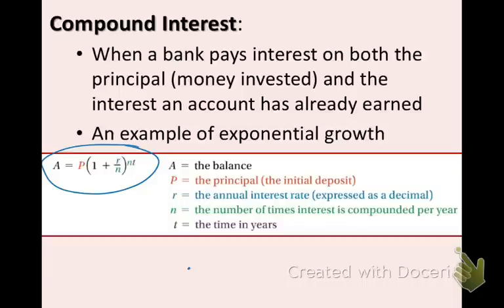A stands for the remaining balance. P stands for the initial amount. Underline that part, it's really important because principle is kind of a weird word. That means the amount that you deposited in the very beginning. R is the annual interest rate. It must be in decimal form. Underline that as well. N is the number of times interest is compounded per year. So monthly would be 12 times a year. Quarterly would be 4 times a year. Once a year would be 1, and daily would be 365. And then lastly, T is the time in years.